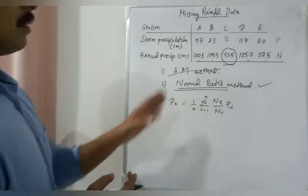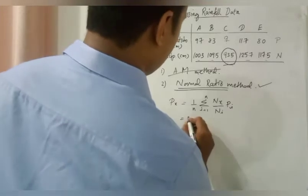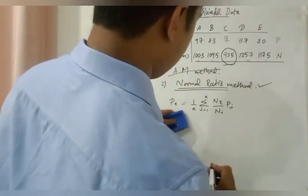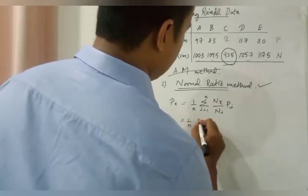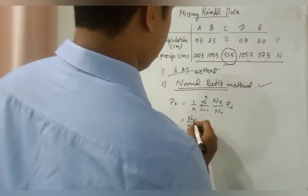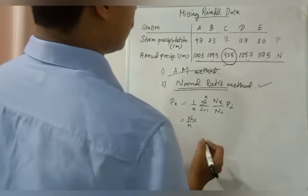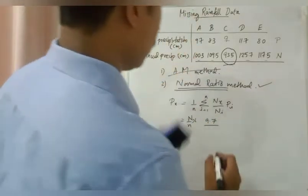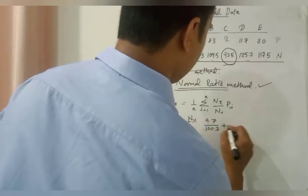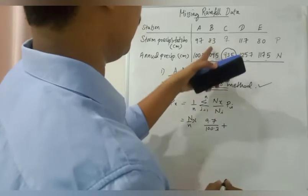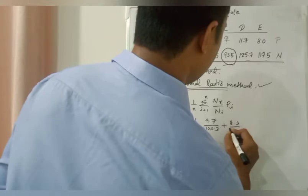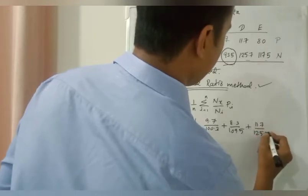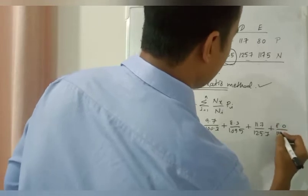We are elaborating it for the sake of our problem. Px is equal to 1 by n. We will take Nx outside. So Nx by n into (P1 by N1 plus P2 by N2 plus P3 by N3 plus P4 by N4). That is 9.7 by 100.3 plus 8.3 by 109.5 plus 11.7 by 125.7 plus 8.0 by 117.5.